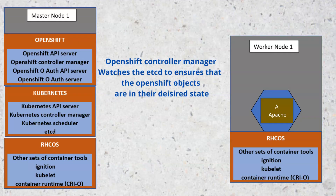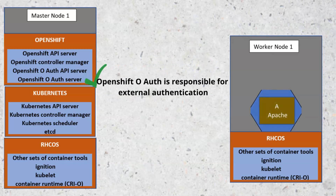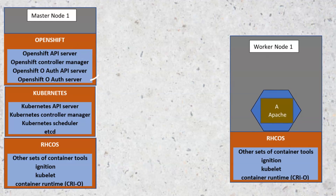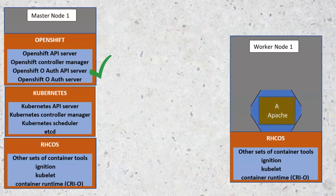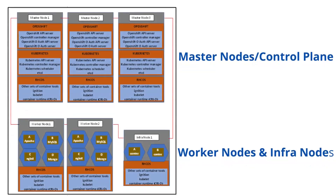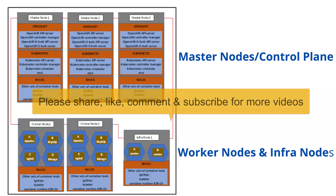The OpenShift OAuth server is responsible for integrating a method of external authentication — it proxies external requests back to the OpenShift API server. Users request tokens from the OpenShift OAuth server to authenticate themselves to the API. The OpenShift OAuth API server is responsible for validating and configuring data to authenticate to the OpenShift container platform, such as users, groups, and OAuth tokens. Having understood the OpenShift architecture, in the next lesson we're going to look at how to install the OpenShift cluster. Thank you for watching, and bye for now.